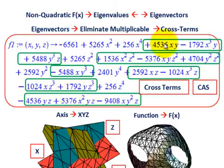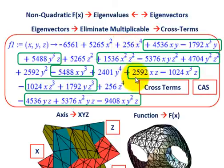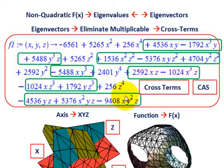What we're going to do is eliminate all these cross multiplicative terms and make this function workable. I'm showing all the cross terms with a green rectangle around them. We're going to accomplish that by calculating the eigenvectors and eigenvalues, and we're going to be using a computer algebra system — Maplesoft in this case. This is our complicated function with a lot of cross terms raised to certain powers.